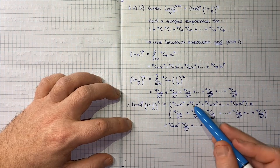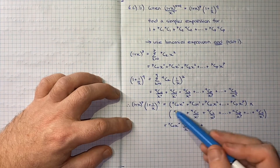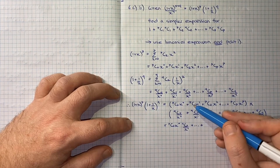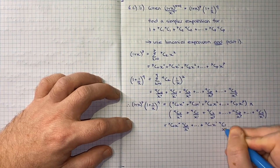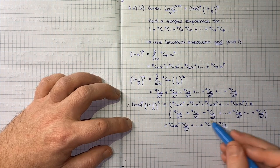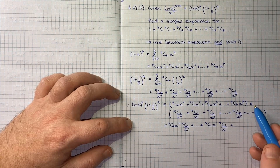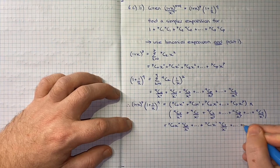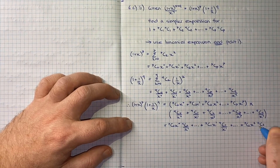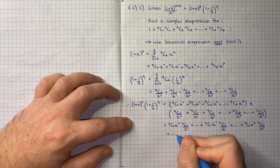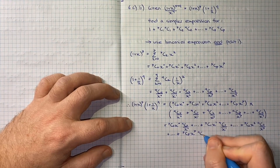The terms independent of x arise when x^k from the first expansion multiplies with 1/x^k from the second. So: pC0·x^0 times qC0/x^0 gives an x-independent term; pC1·x^1 times qC1/x^1 gives another; pC2·x^2 times qC2/x^2 gives another; and so on, up to pCp·x^p times qCp/x^p. All other cross-products still carry powers of x, so we can skip those.